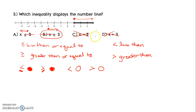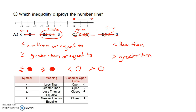Less than — as long as your variable is first — would be an open circle to the left. And greater than, as long as your variable is written first — that's important — would be an open circle to the right. I've included a couple of visuals to help you out. If you need, you can always pause the video and write down your symbol, its meaning, and whether it's an open or closed circle.